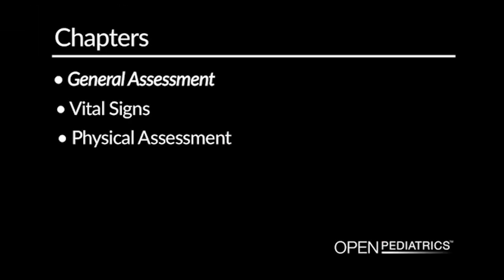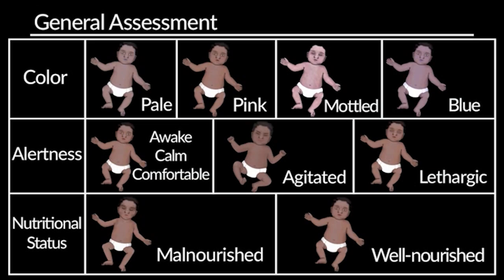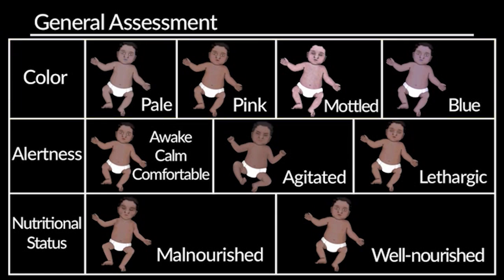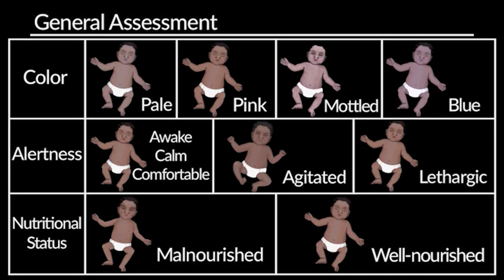General assessment. First you want to take a look at the overall appearance of your patient. How does their color look? Are they pale, pink, mottled, blue? Do they look like they're awake, alert, calm, comfortable, or are they agitated or lethargic? Next, do they appear to be malnourished or well-nourished? Does the parent report that the child is not taking their normal amount of PO intake?